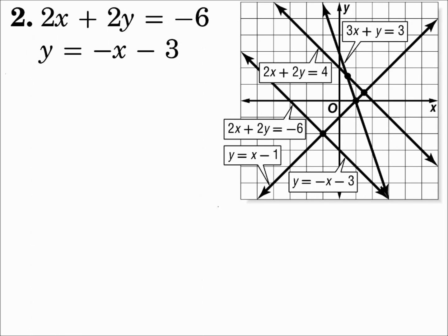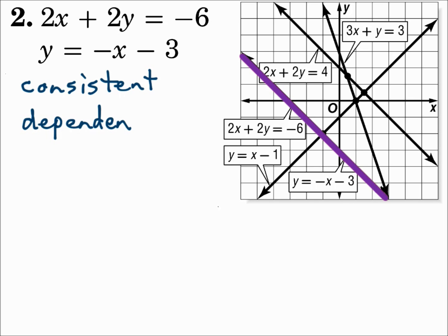Number two: 2x plus 2y equals negative 6, which is the blue line, and y equals negative x minus 3, which is the red line. The red and blue lines overlap, so the whole line overlaps itself. When it's the same line, that's consistent dependent.